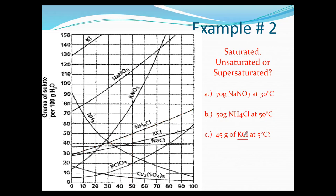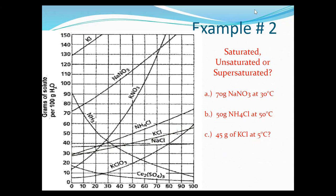Last example: potassium chloride at 5 degrees with 45 grams. Find the KCl line and look between zero and 10 degrees — right around 5 degrees, the curve sits just below the 30-gram mark. But they say we have 45 grams. We're above the maximum amount that will dissolve, so this is supersaturated. What's going to happen is it will precipitate out and crystallize — you'll see the little crystals sink to the bottom of the beaker because it just can't all dissolve.